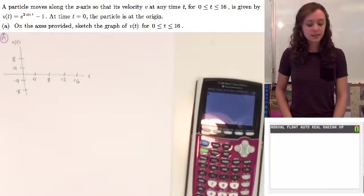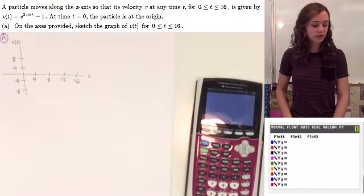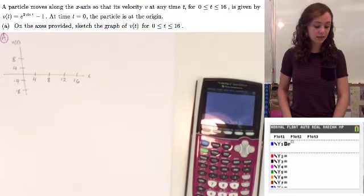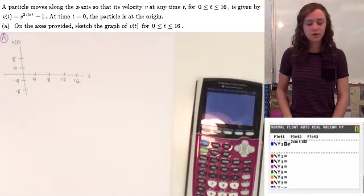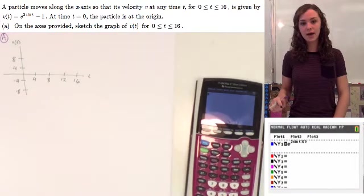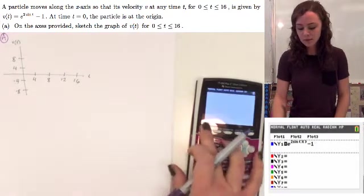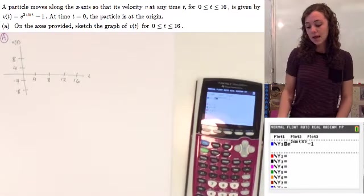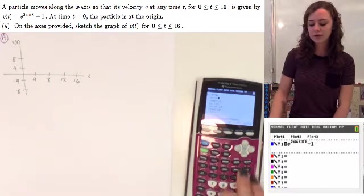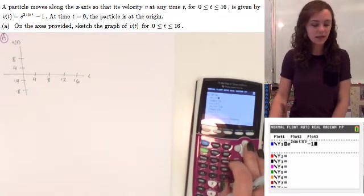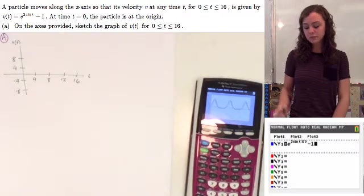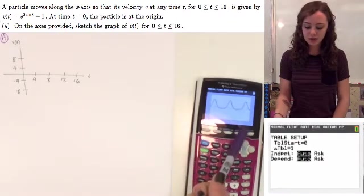So part a asks us to sketch a graph of v(t) on the axis provided for 0 through 16. So we're going to go ahead and put that in our calculator under y1, which I already did, and then set your window so that the minimum x value is 0 and the maximum is 16, as it says in the problem. And then press graph, which I already had done, and it shows you the graph.